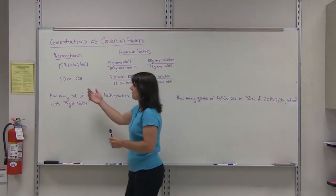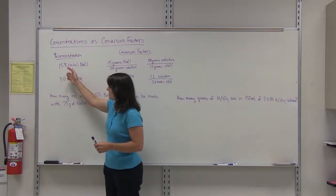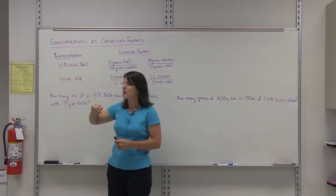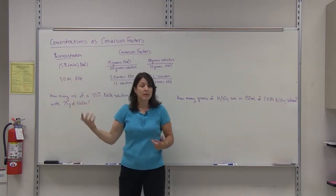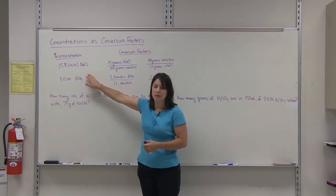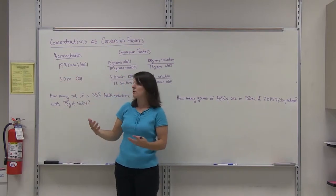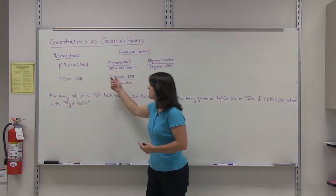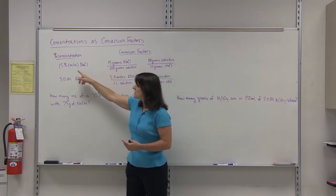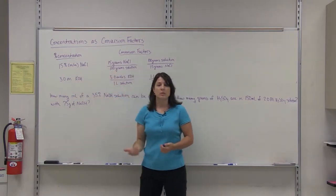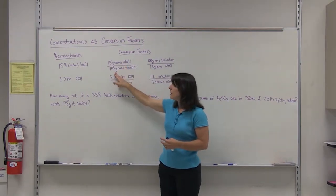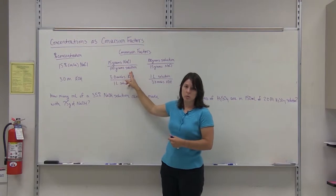Concentration expressed as a percentage — for example, 15% mass-mass concentration of sodium chloride. If you're given that percent concentration, you can turn it into a fraction. Any percentage is a fraction of 100, so 15% means you have 15 out of 100. Since it is mass-mass, we understand that it's 15 grams of our solute sodium chloride per 100 grams of our whole solution.